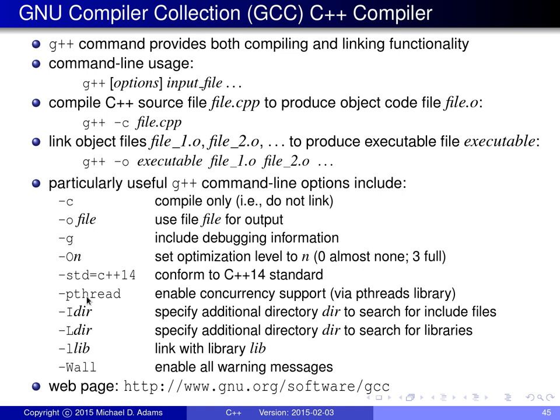The -pthread option specifies that concurrency support via the POSIX threads library should be used. The -I option is used to specify additional directories in which to search for include files or header files. The C++ compiler has a built-in list of directories where it normally looks for include files — files specified with the #include directive. If your include files are in directories not on that list, you specify them with -I followed immediately by the directory name.